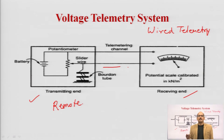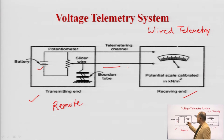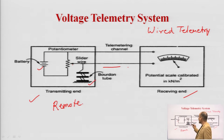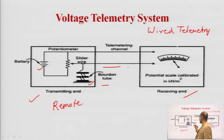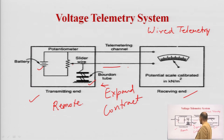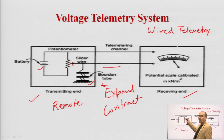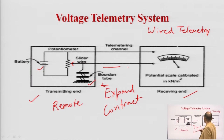In the voltage telemetry system arrangement, you can see a battery and a potentiometer arrangement with a slide wire connected in series. A Bourdon tube is applied here, made of elastic material. When pressure is applied on the Bourdon tube, it will either expand or contract. When it expands or contracts, it changes the position of the slide wire. Due to this change in the slide wire, the overall resistance of the potentiometer will change. That change in potentiometer resistance is measured through the potential scale, which is connected in parallel.